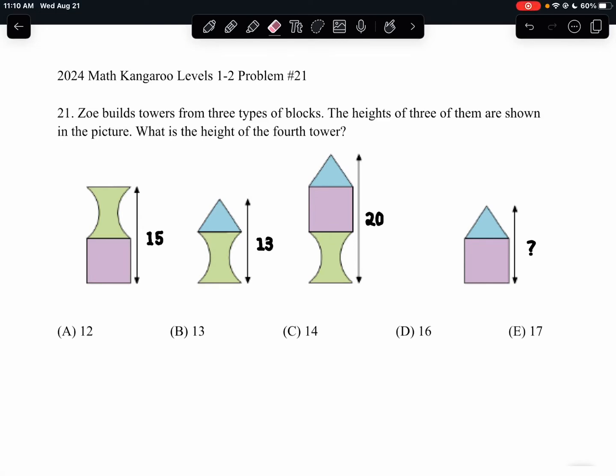This is the 2024 Math Kangaroo Levels 1-2, problem number 21. Zoe builds towers from three types of blocks. The heights of three of them are shown in the picture. What is the height of the fourth tower?